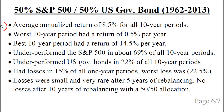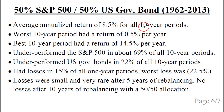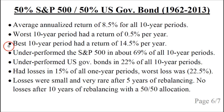Let's look at the historical performance of a 50-50 rebalancing between the S&P 500 and US government bonds for the period between 1962 and 2013. The average annualized return was 8.5% for all 10-year periods. The worst 10-year period had a return of 0.5% per year, and the best 10-year period had a return of 14.5% per year.